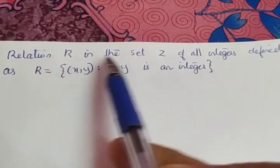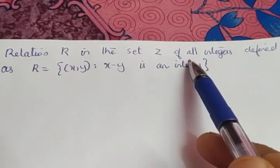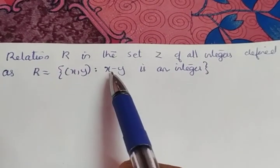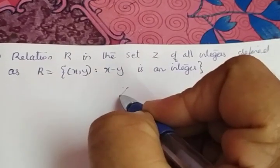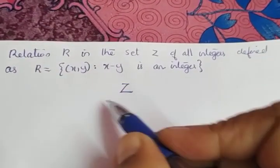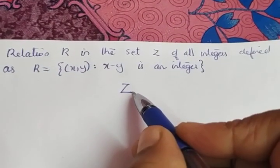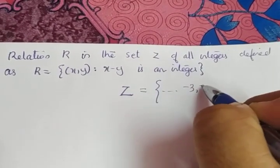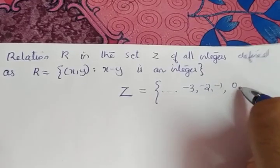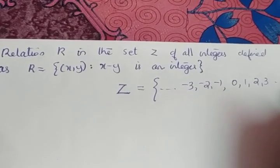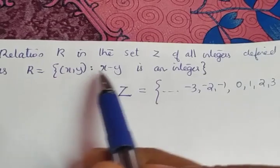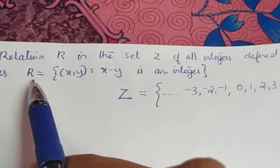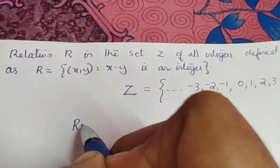So, the next question: relation R in the set of all integers defined as R equals the set of pairs (x,y) such that x minus y is an integer. The set Z contains positive integers, negative integers, and zero. If I write the set: minus 3, minus 2, minus 1, 0, 1, 2, 3, etc. This is our set. The relation given is x minus y - the difference of two numbers is an integer. That is how we are collecting the elements of R.